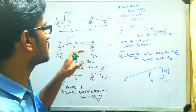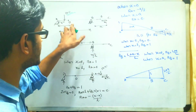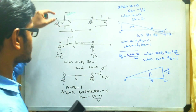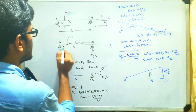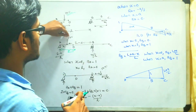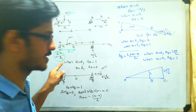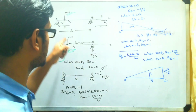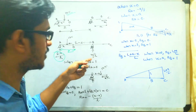First, we discuss how to draw the ILD for reaction A, then B, and after that the shear force at points D and E, and the bending moment respectively. For the first case, if a 1 kN load is acting at distance x from point A, the remaining portion will be L minus x. Using equilibrium, RA equals (L minus x)/L and RB equals x/L.